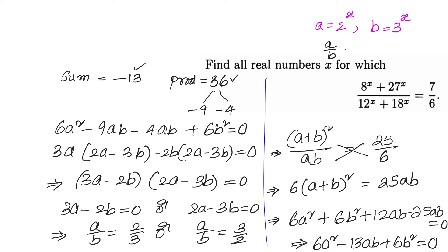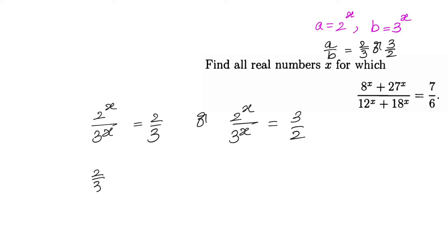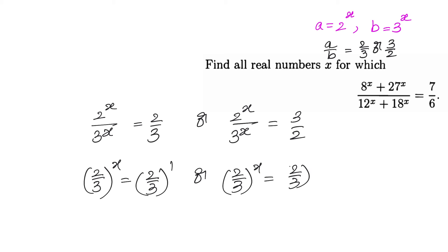Substituting back a = 2^x and b = 3^x: (2/3)^x = 2/3 = (2/3)^1, giving x = 1; or (2/3)^x = 3/2 = (2/3)^(−1), giving x = −1. So there are only two solutions: x = 1 and x = −1.